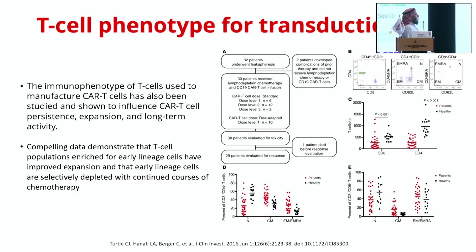The T-cell phenotype at the time of transduction is also important. Compelling data demonstrate that T-cell populations enriched for early lineage cells have improved expansion, and that early lineage cells are selectively depleted with continued courses of chemotherapy. When you give multiple lines of treatment, you exhaust or reduce early T-cell development, associated with worse outcomes. Once a patient is relapsing, it is better to proceed to CAR-T early and avoid exposing the patient to multiple additional lines of treatment.